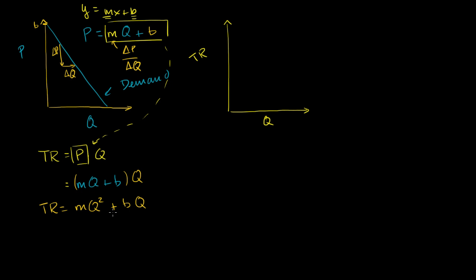And this is a parabola, and it's actually going to be a downward sloping parabola, because m is going to be negative. This is downward sloping. m has a negative slope, so m is negative. So we know that m is less than 0 over here. That's one of the assumptions we'll make. If m is less than 0, this is going to be a downward opening parabola. Total revenue will look something like that. That is our total revenue.